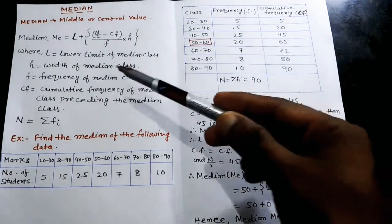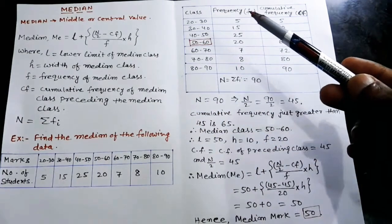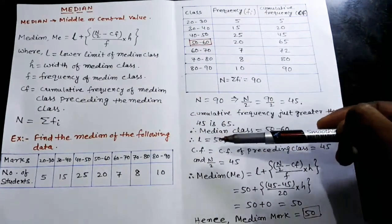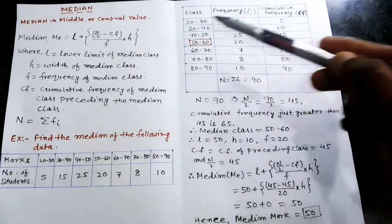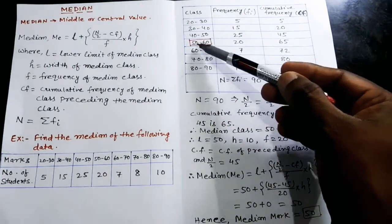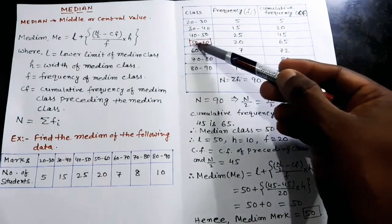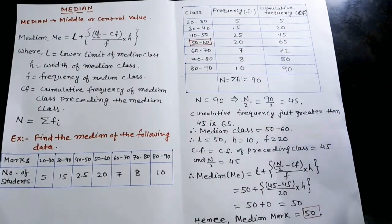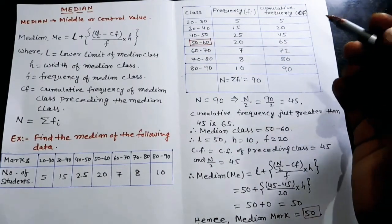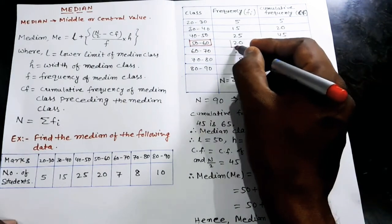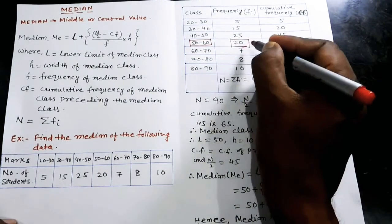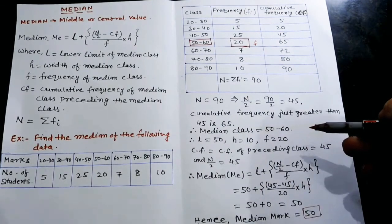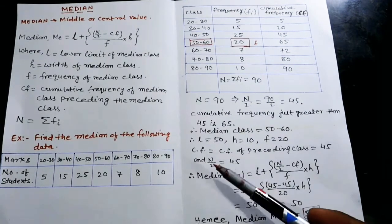Now we identify the formula values. L is the lower limit of the median class, so L = 50. H is the width of the median class: 60 − 50 = 10, so H = 10. F is the frequency of the median class, which is 20, so F = 20.